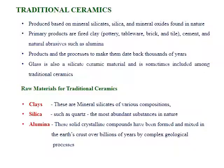Let us look at properties and information about these types of ceramics one by one. Traditional ceramics are products based on mineral silicates, silica, and mineral oxides found in nature. Primary products are fired clay such as pottery, tableware, brick and tiles, cement, and natural abrasives such as alumina. Products and the processes to make them date back thousands of years. Glass is also a silicate ceramic material and is sometimes included among traditional ceramics.